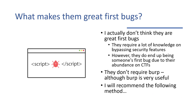So what makes XSS great first bugs? I actually don't think they are. They require a lot of knowledge on bypassing security features, but they end up being someone's first bug due to their abundance on CTFs. They're not as common on real web apps as they are on CTFs. They don't really require Burp, although Burp can be really useful.